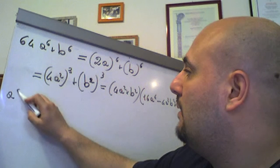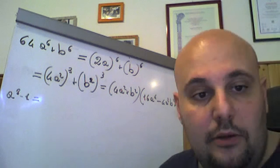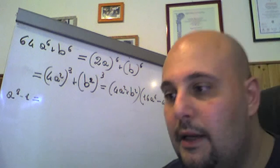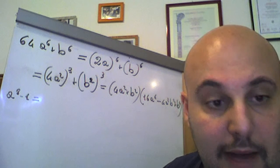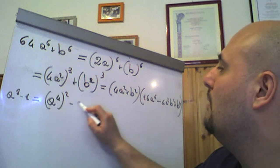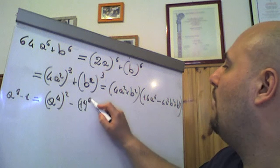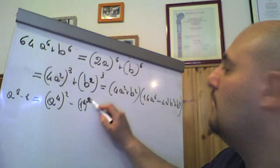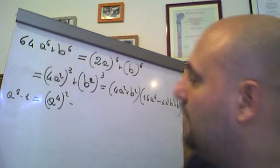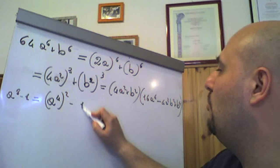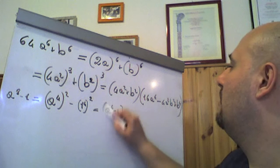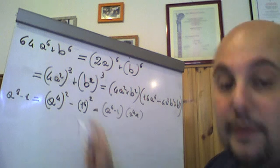a all'ottava meno 1. Queste cose naturalmente le abbiamo viste, stiamo un po' riepilogando. Come si fa a⁸ meno 1? Anche questo in realtà è una differenza tra 1 all'ottava e 1 all'ottava, quindi una differenza tra potenze uguali di ordine pari, la possiamo fare. Possiamo scrivere come (a⁴)² meno (1⁴)² — ricordo che 4 per 2 fa 8, quindi 1 alla quarta, 1 al quadrato, 1 all'ottava è sempre 1 — quindi questo è un (1⁴)². Quindi si scriverà (a⁴ meno 1) per (a⁴ più 1): differenza di quadrati.